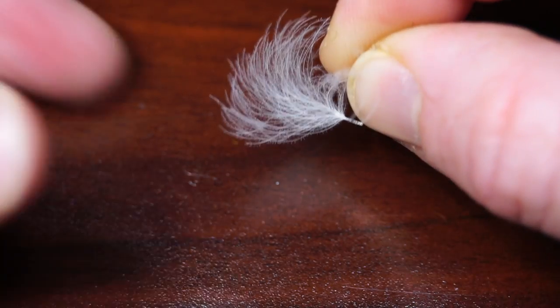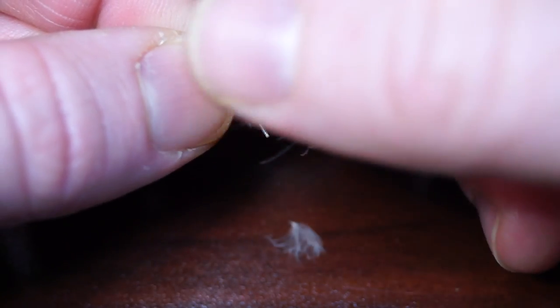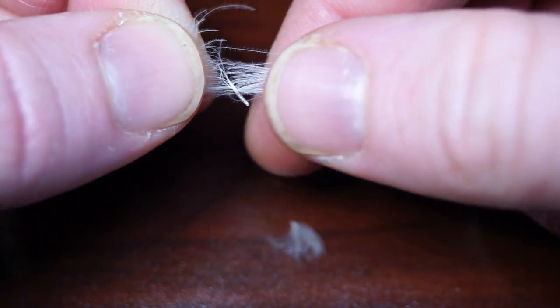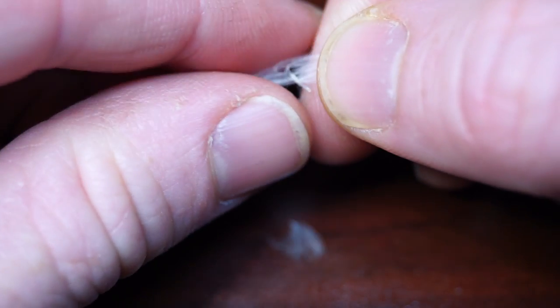Now select a single CDC puff. I like using white, but many have luck with gray or dun color. On these small flies you really don't need a whole puff. I like splitting them in half using wet fingers to split them, which really helps.